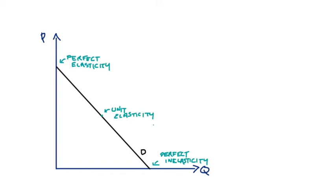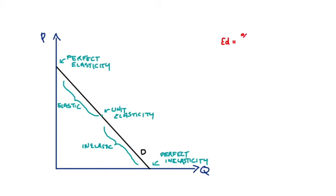These points define our regions of elasticity along the demand curve. In this top region the points on our demand curve will be all elastic, and at the bottom our points are inelastic. Let's start by noting the definition of our elasticity of demand as being the percentage change in quantity divided by the percentage change in price.